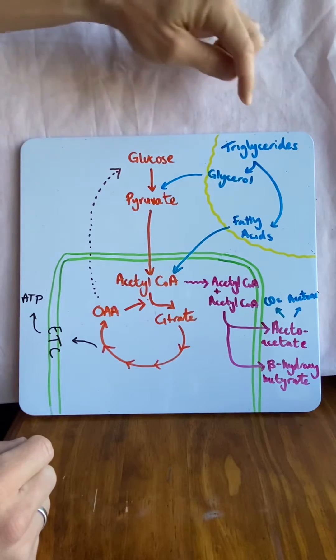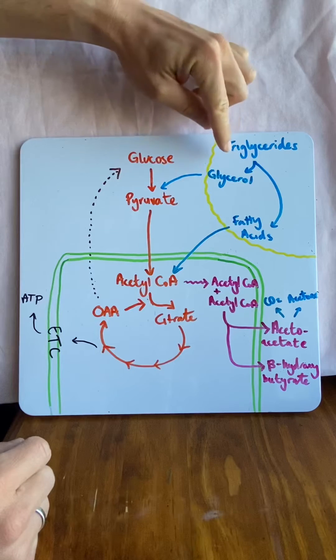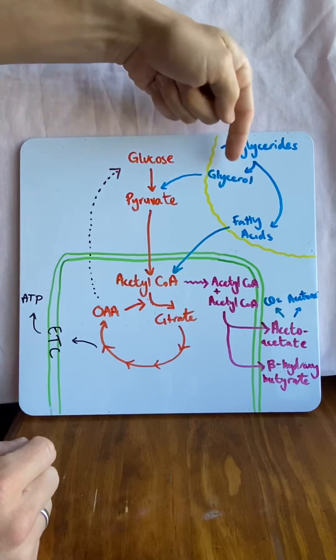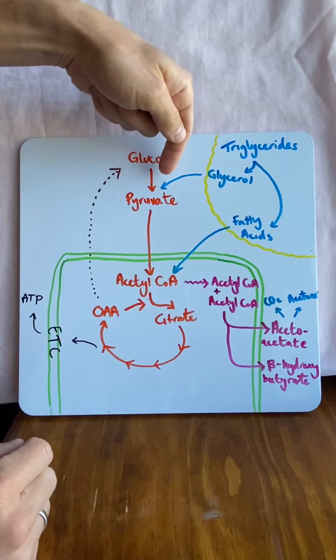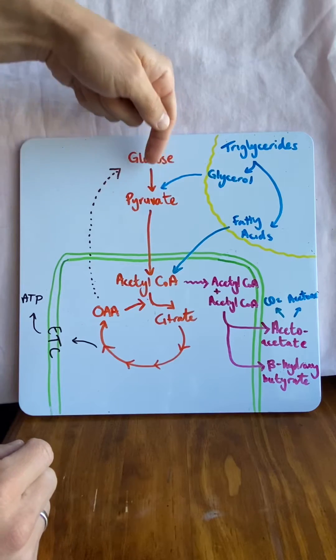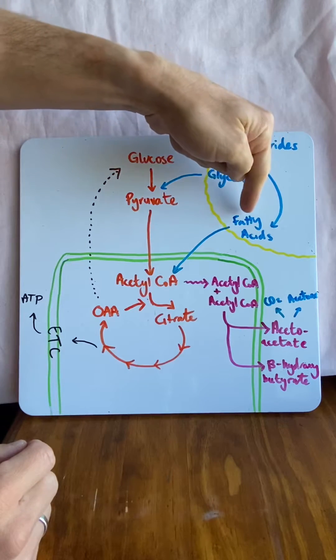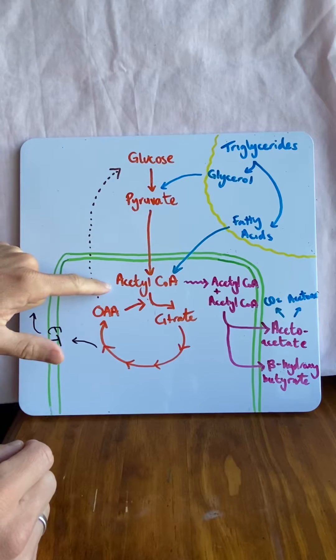In addition to that, triglycerides, which are fats, can break down into their components, which are glycerol and fatty acids. Glycerol can jump into the glycolytic pathway at this stage and help form glucose. Fatty acids will jump here and form acetyl-CoA.